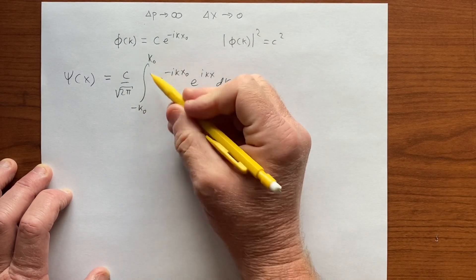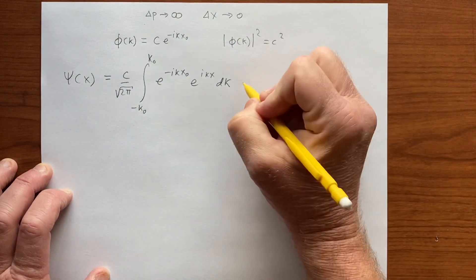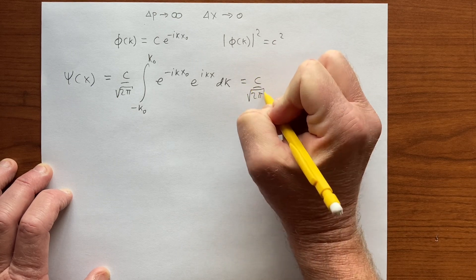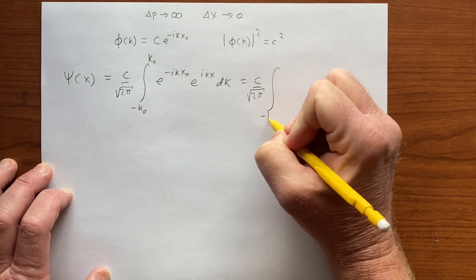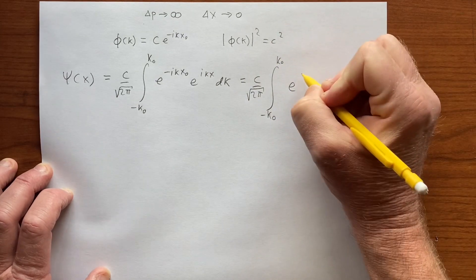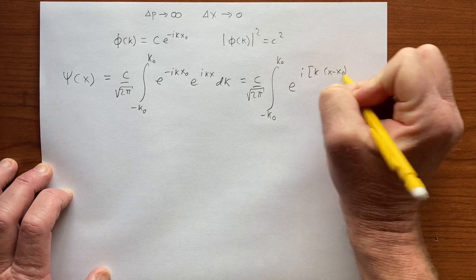We're making k₀ go to a large value. This looks like c over square root of 2π integral from negative k₀ to k₀ of e to the i k times (x minus x₀) dk.